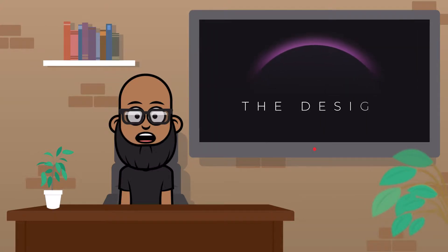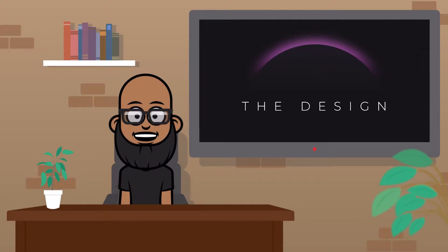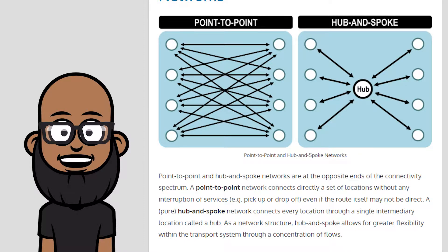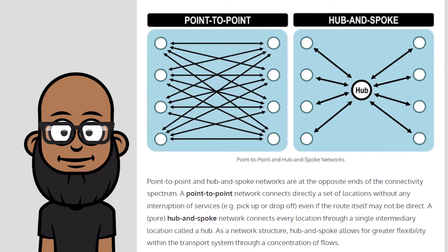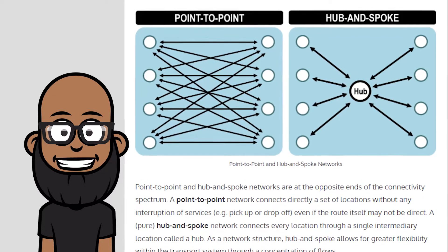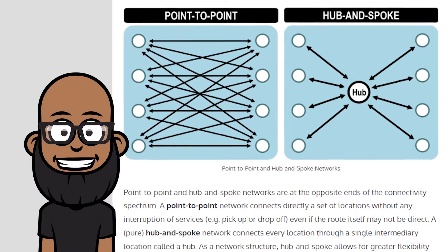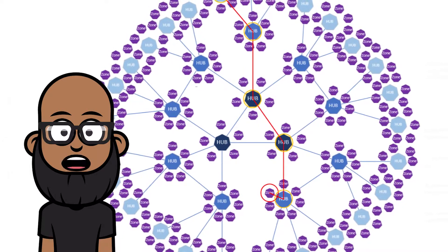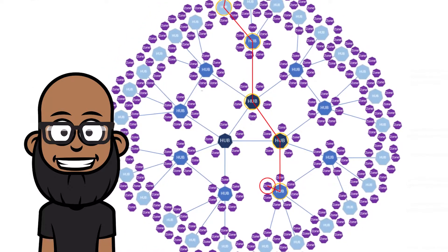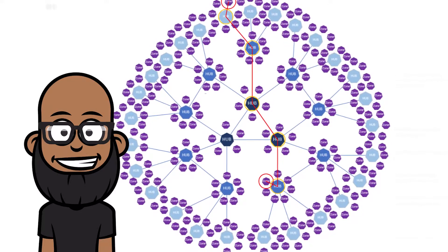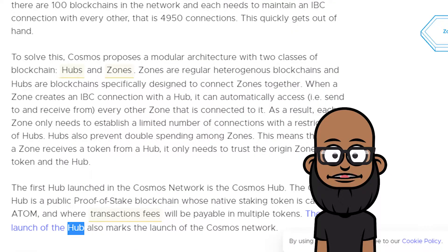Let's take a basic look at how Cosmos is designed. Cosmos' design was inspired by a system architecture model called Hub and Spoke. Essentially, it's a design where one or more connected relays are used to connect other also connected networks. Cosmos took this architecture and refined it into their own unique design, which allows them to achieve interoperability and security. Simply put, Cosmos has two network types: Hubs and Zones.